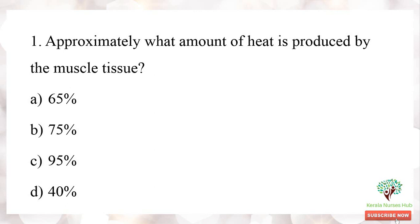First question: approximately what amount of heat is produced by the muscle tissue? The options are 65%, 75%, 95%, and 40%. The right answer is 95%.